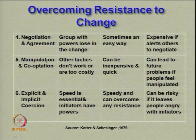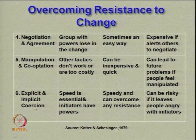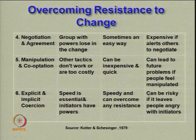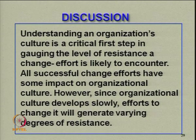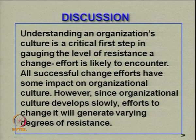When other tactics do not work or are too costly, you use manipulation and co-optation. It can be inexpensive and quick but can lead to future problems if people feel manipulated. Explicit and implicit coercion is used when speed is essential and initiators have power. It can overcome any resistance speedily but can be risky if it leaves people angry with initiators. Understanding an organization's culture is a critical first step in gauging the level of resistance a change effort is likely to encounter — you go back to the cultural paradigms.